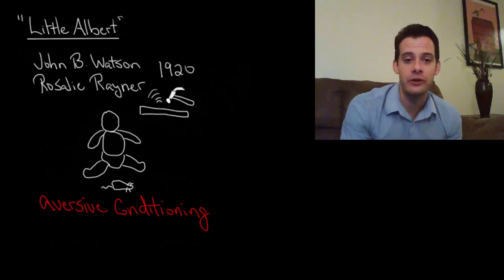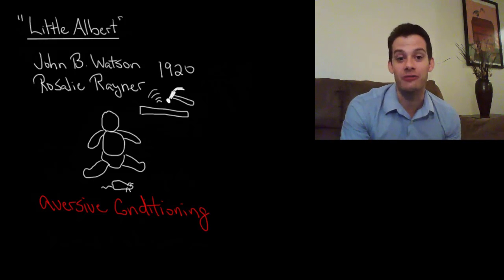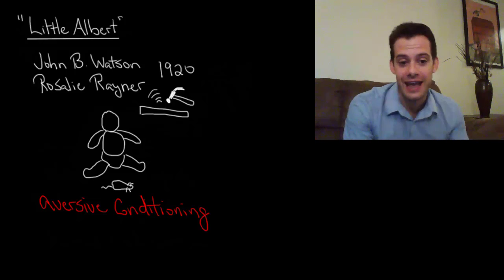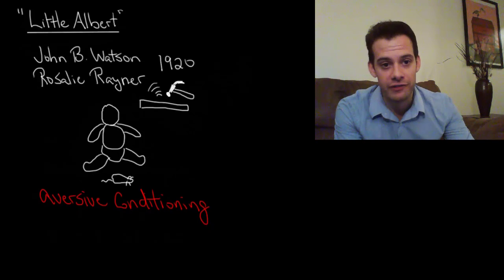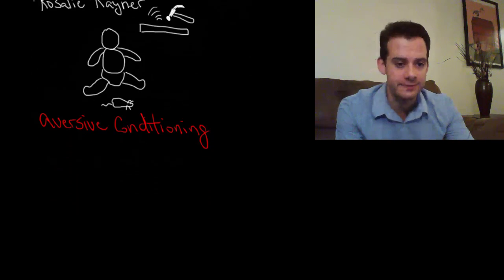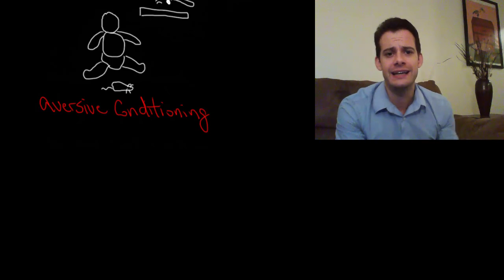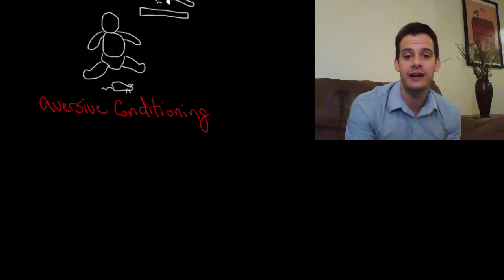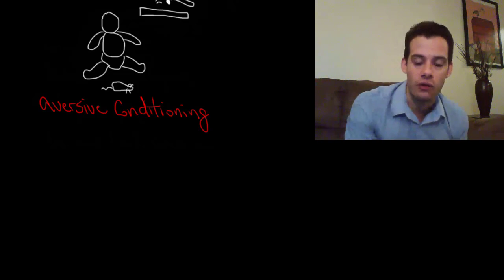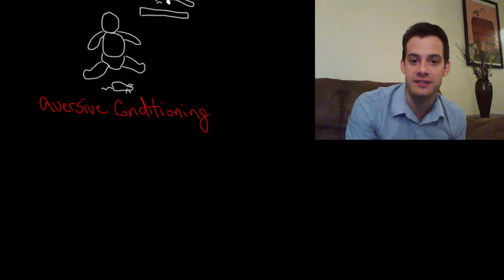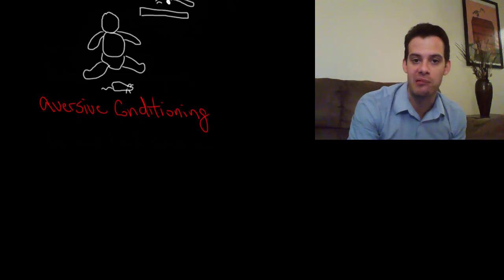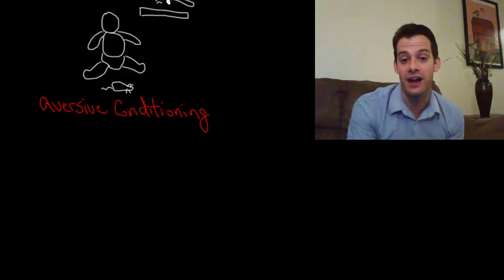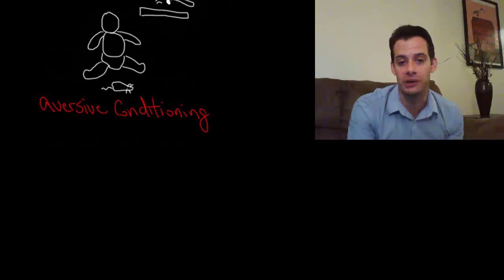If we adopt a view this extreme, there are bound to be examples that don't fit. We're going to see another example of aversive conditioning that shows it's not just about learning — there's also a biological role. There's a predisposition for certain types of learning; we are prepared to learn certain things and not others, and certain associations will be learned more easily.